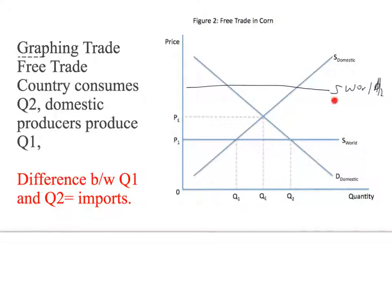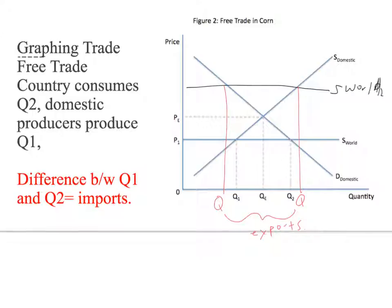If the world price is above the domestic equilibrium price, the country will export. Domestic demand at that higher price is lower, so domestic demand is covered but excess corn remains. The country exports the difference between the two quantities. These free trade graphs are all efficient — there is no deadweight loss. The market outcome, whether importing, exporting, or neither, is the efficient outcome. Any deviation away from those outcomes creates deadweight loss and is less efficient.